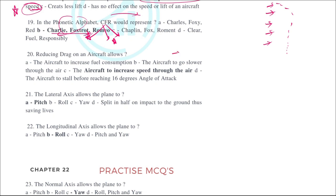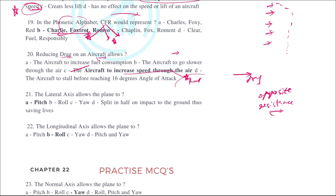Reducing the drag on the aircraft allows the aircraft to increase speed. Drag is the force which acts opposite to the direction of the aircraft's motion, always acting as resistance. To reduce this resistance, we must increase the thrust, which will effectively reduce the drag.